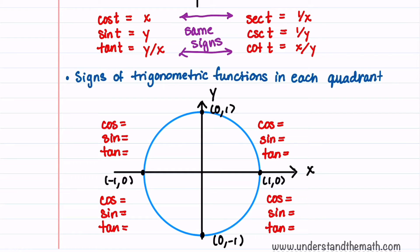We'll now determine the signs of cosine, sine, and tangent in each quadrant. In the first quadrant, x and y are positive, so cosine is positive, sine is positive, and tangent is sine over cosine, so that's positive. In the second quadrant, x is negative and y is positive, so cosine is negative, sine is positive, and tangent is sine over cosine — a positive divided by a negative — so tangent is negative. In the third quadrant, both x and y are negative, so cosine is negative, sine is negative, and tangent is a negative divided by a negative, so tangent is positive. In our fourth quadrant, x is positive and y is negative, so cosine is positive, sine is negative, and tangent being sine over cosine is negative.